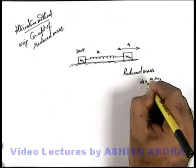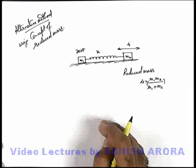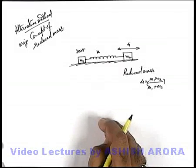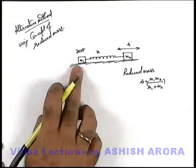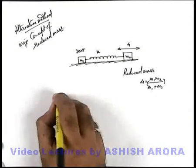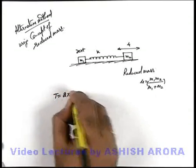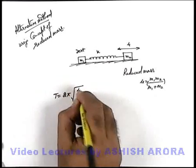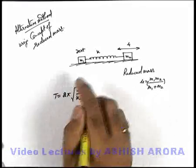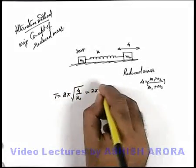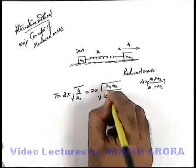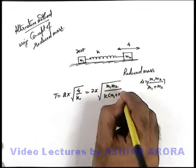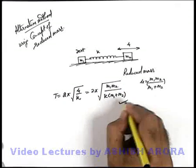This we already deduced in the topic of spatial concepts of physics. Now if only m2 is oscillating and m1 is kept at rest, time period of oscillation can directly be written as T = 2π√(μ/k). If we substitute the value of μ, the result will be 2π√(m1*m2/(k*(m1+m2))).